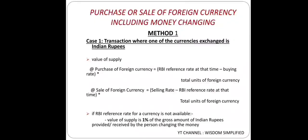In this case, if you are purchasing foreign currency, the formula is: RBI reference rate at that time MINUS buying rate, MULTIPLIED BY total units of foreign currency being purchased. If you are selling foreign currency, the formula is: selling rate MINUS RBI reference rate at that time, MULTIPLIED BY total units of foreign currency.